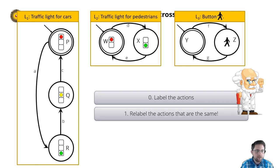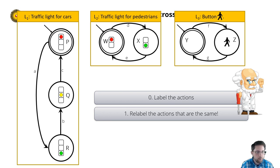Next, we relabel the actions that represent the same action. In our case, let's look at the light for pedestrians and the button. Is the unpushing of the button, action G, a real action? No — it happens when the light of the pedestrian changes. So we can either join it with action D or with action E. If you join it with action D, then the button can be pushed again while the traffic light is green. As this does not feel natural, I let it coincide with action E: if the light turns red again, the button can be pushed. So instead of calling the unpushed action G, I relabel it to E.